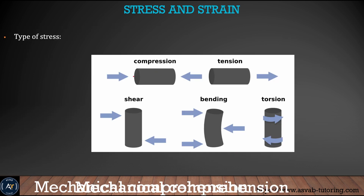The next thing we'll learn is different types of stress — make sure you remember these because you'll definitely see this type of question in the test. The first is compression: one side presses and the other side also presses. Tension is pulling from both ends. Shear is pulling one way and pushing the other. Bending goes in one direction and then the other. Torsion is twisting.